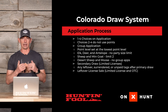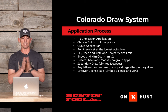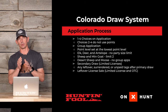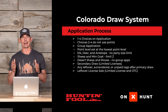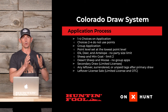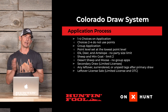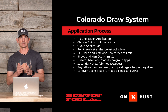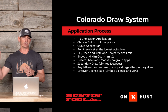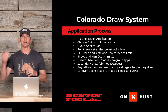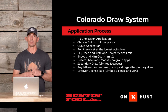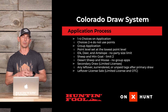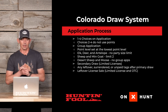On your application you're given one through four choices. Your first choice will use your points — that's the only choice where preference points are applied. They don't go over anyone's second, third, or fourth choice until they've gone through everyone's first choice, so points are not used for second through fourth choices. If you draw a second, third, or fourth choice, you still build a point for that year and get a tag, though those are typically less sought-after hunts.